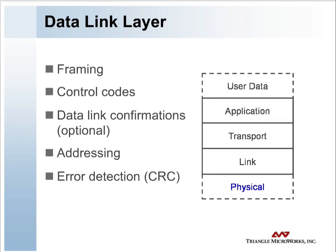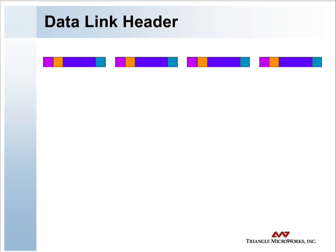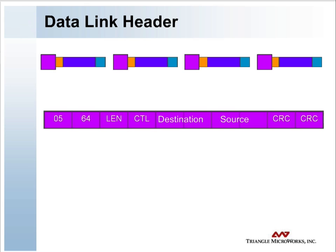The data link layer manages the logical link between the sender and receiver of information, and it improves the physical channel error characteristics. For DNP3, this is accomplished by beginning each data link frame with a data link header and inserting a 16-bit CRC every 16 bytes of the frame. A frame is a portion of a complete message communicated over the physical layer. The maximum size of a data link frame is 256 bytes.